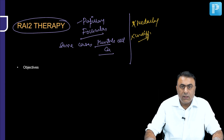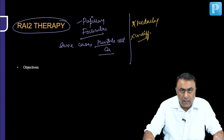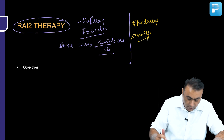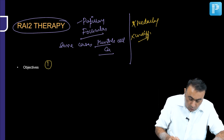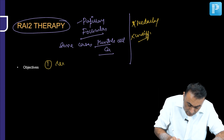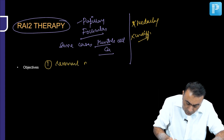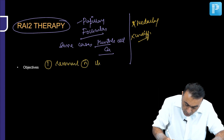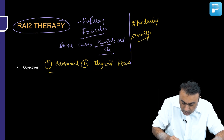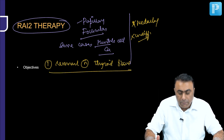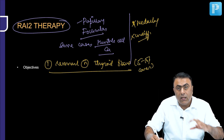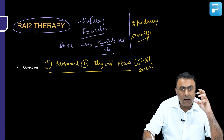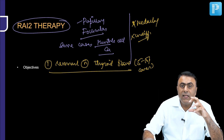What are the objectives of radioactive iodine therapy? The first objective is to detect any remnant normal thyroid tissue. Around 5 to 10 percent of cases, even after a total thyroidectomy, some remnant normal thyroid tissue may be left behind.